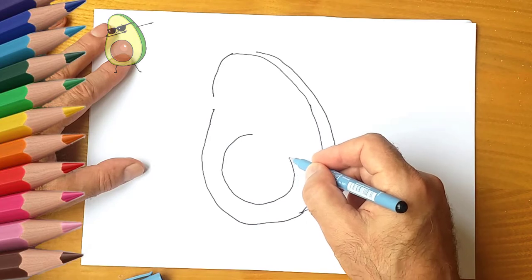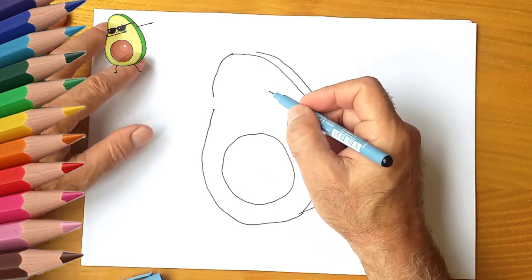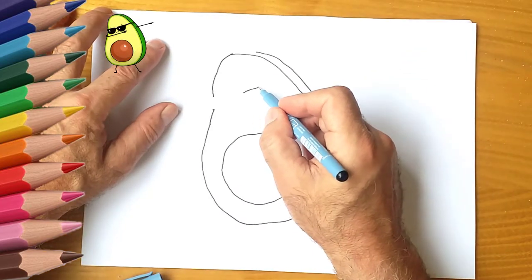We draw black sunglasses. Our avocado is dancing. We draw hands in motion.